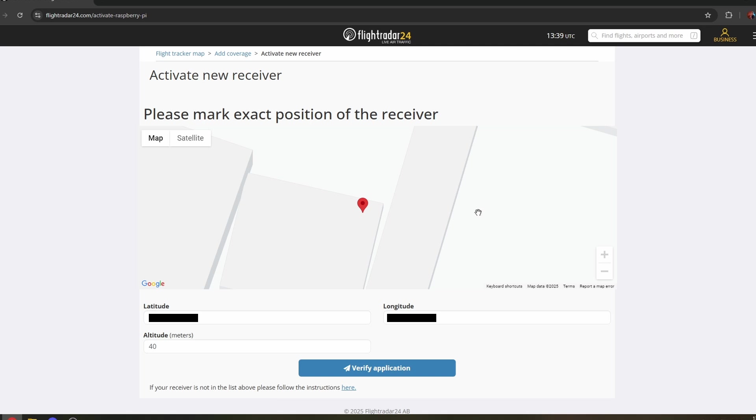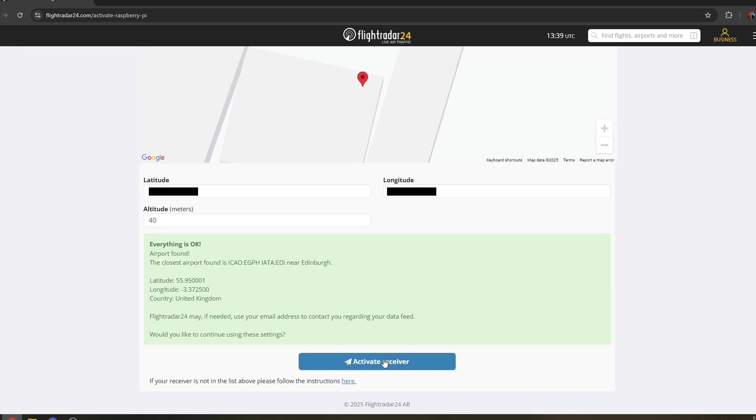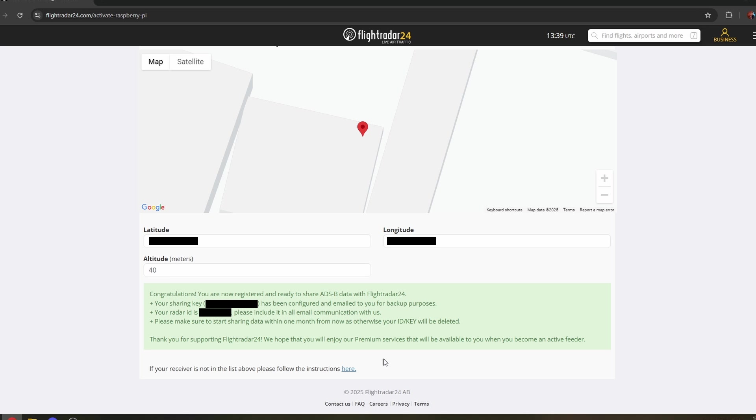Once you've marked the position of where it is you shall have a button that says verify application. We are near Edinburgh airport because that's the closest one. There we go. You'll then get the window saying congratulations you're now registered. And that is it.